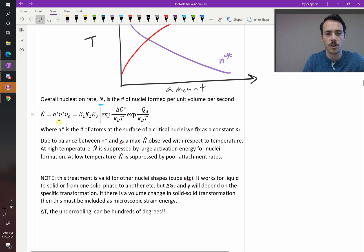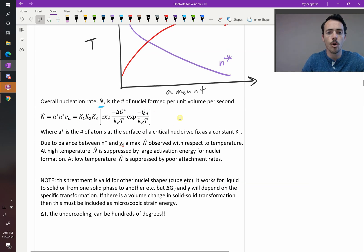It's equal to A-star, that's the number of atoms at any given time they're at the surface of a critical nuclei, N-star, that's our number of critical nuclei, multiplied by V-sub-D, the attachment frequency. So, you can collapse all these constants, K1, K2, and K3 together, and then you're going to multiply them by exponential of negative activation energy for homogeneous nucleation, divided by thermal energy, and exponential of negative activation energy, divided by thermal energy.